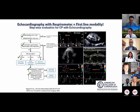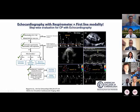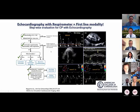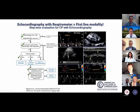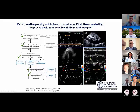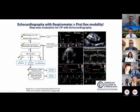Echocardiography is the first-line modality for constriction and must be performed with a respirometer using a specific protocol. The algorithm involves looking at mitral inflow and IVC — typically a plethoric IVC and high E-to-A ratio — then ventricular septal motion with respiration, including septal bounce confirmed with M-mode. If positive, proceed to tissue Doppler: if the medial annulus velocity exceeds 8 cm per second, you are in the presence of constrictive pericarditis. Additional findings include annulus reversal, where septal E-prime is higher than lateral E-prime.